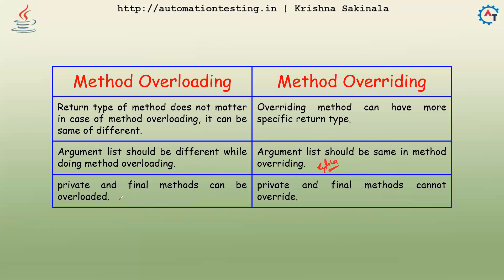Private and final methods can be overloaded, because overloading happens in the same class. If you have a private method, it is accessible inside the same class, so you can have multiple private methods with the same name. However, private and final methods cannot be overridden — private is restricted to the class.